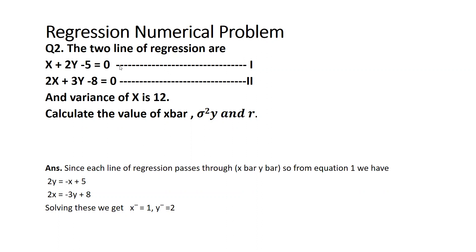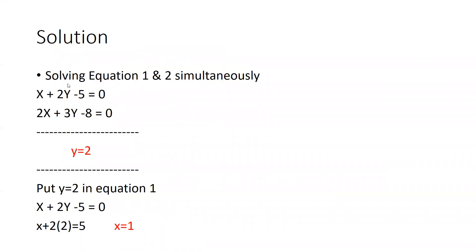You can see here, this is the first equation and that one is the second equation. When we have solved, we have got x̄ equal to 1, ȳ equal to 2. But the question is how we have to reach this solution. So the solution would be like this. This is my first equation: x plus 2y minus 5 equal to 0, and 2x plus 3y minus 8 equal to 0.